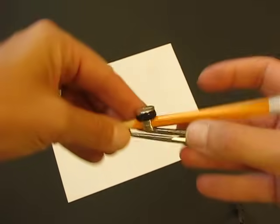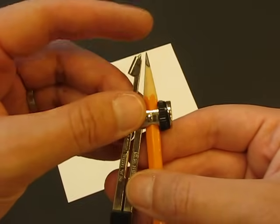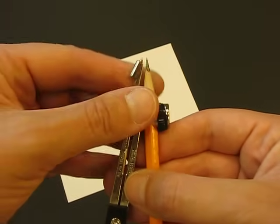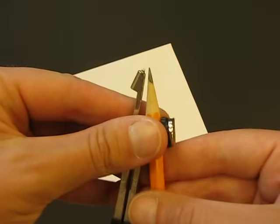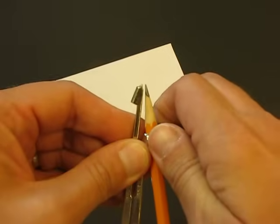But before you tighten it, you make sure that the pencil point and the point of the compass are at equal length to each other. Just as you get that, then tighten that screw so that the pencil does not move.